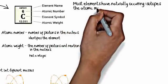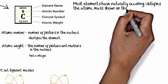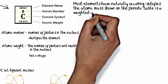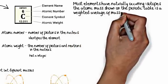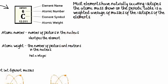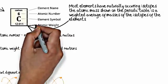The atomic mass that is shown on the periodic table is what is known as a weighted average of the masses of the isotopes. You can see I'm drawing an arrow here to the weighted average.